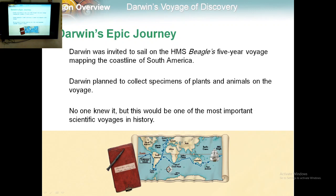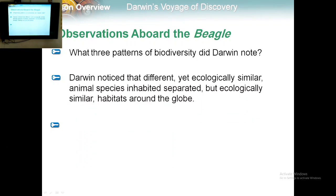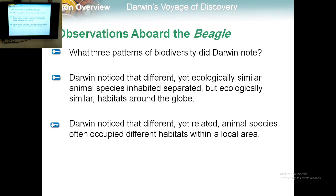Let's check the three patterns of biodiversity that Darwin noted. The first one: Darwin noticed that different yet ecologically similar animal species inhabit separated but ecologically similar habitats around the globe. The second one: Darwin noticed that different yet related animal species often occupied different habitats within a local area.